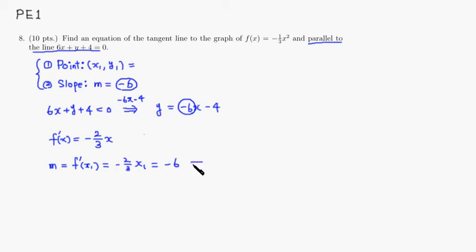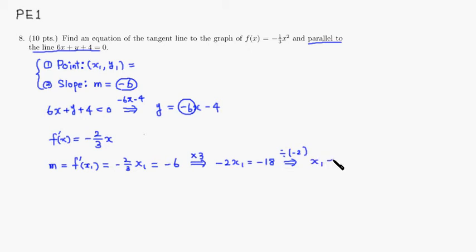We solve the equation −(2/3)x₁ = −6. Multiply both sides by 3 to get −2x₁ = −18, then divide by −2 to find x₁ = 9.